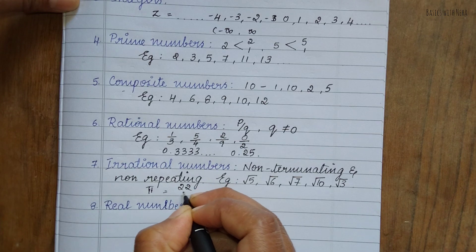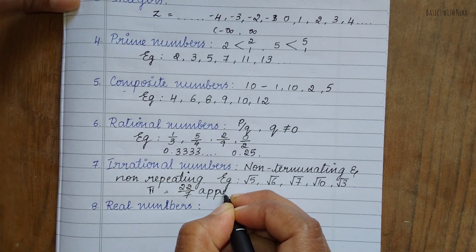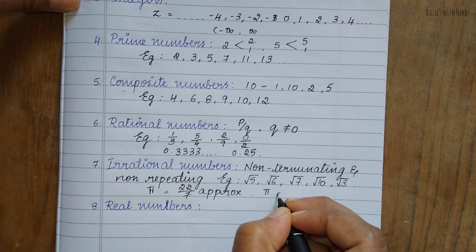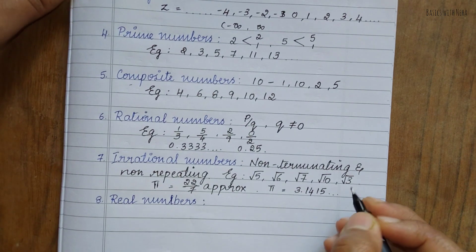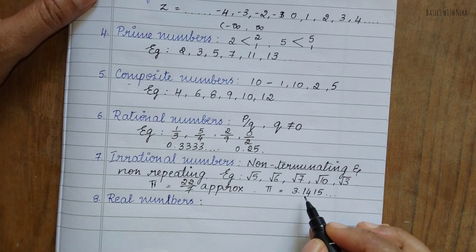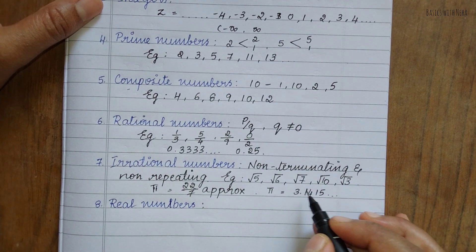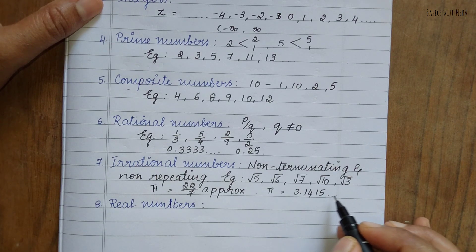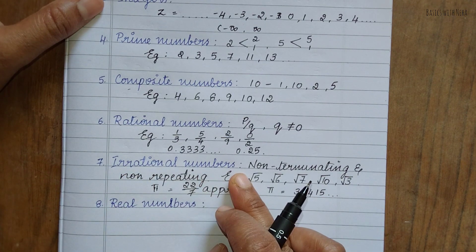The best examples of irrational numbers are π, where 22/7 is an approximate value, and √2. These are irrational numbers.